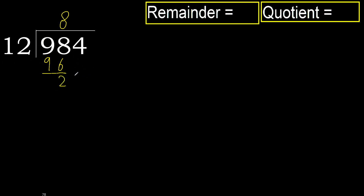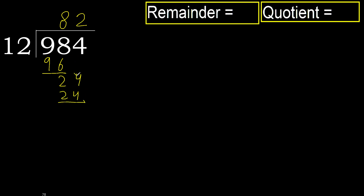Next, bring down 4 to get 24. Divide by 12. Multiply by 3: 36 is greater. Multiply by 2: 24 is not greater.